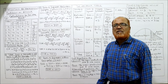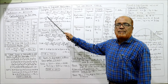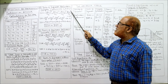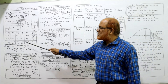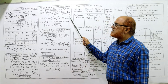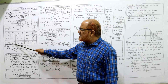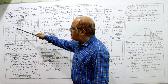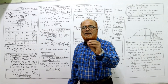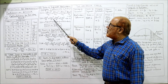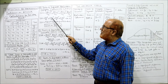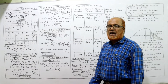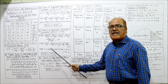Sum of Squares between Columns SSC = (ΣC1)²/n1 + (ΣC2)²/n2 + (ΣC3)²/n3 + (ΣC4)²/n4 − CF. There are four columns: C1, C2, C3, C4. Each column has n = 5 items. So SSC = 7²/5 + (−6)²/5 + 38²/5 + (−17)²/5 − 24.2 = 339.4.